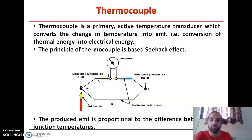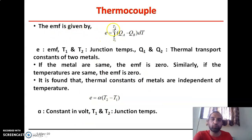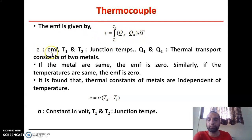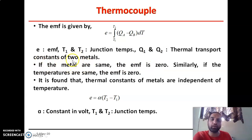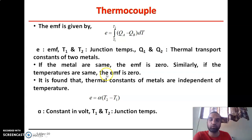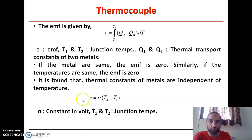The EMF is given by: E = ∫(T1 to T2) (QA − QB) dT, where E is the EMF induced across the junction, T1 and T2 are the junction temperatures, and QA and QB are the thermal transport coefficients of the two metals. If the metals are the same, the EMF is zero. Similarly, if the temperatures T1 and T2 are the same, the EMF becomes zero. It is found that the thermal constants of metals are independent of temperature, so we get: E = α(T2 − T1), where α is a constant in terms of volts and T1, T2 are the junction temperatures.